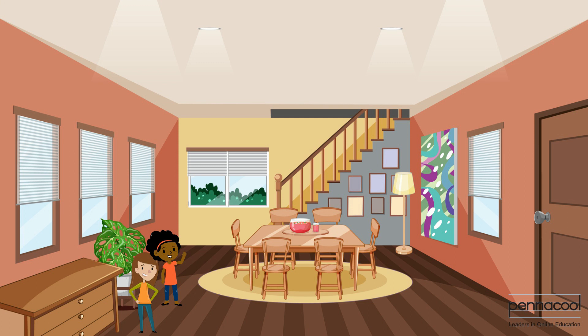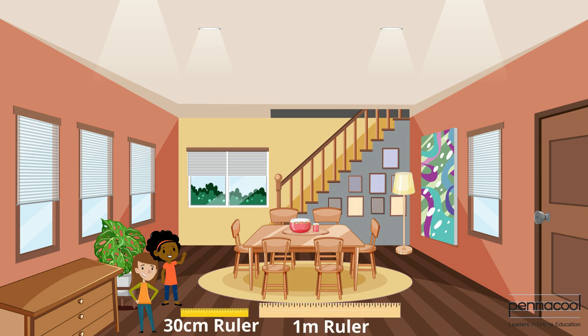Lillian and Christine are measuring different items around the house. They have a 30 centimeter ruler, a meter rule, and a tape measure to help them make these measurements.